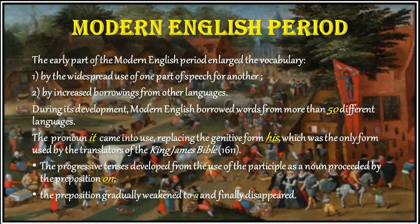The sixteenth-century pronoun 'it' came into use, replacing the genitive form 'his', which was the only form used by the translators of the King James Bible in 1611. The progressive tenses developed from the use of the participle as a noun preceded by the preposition 'on'. The preposition gradually weakened to 'a' and finally disappeared.